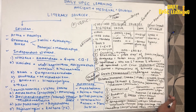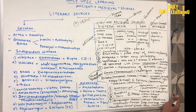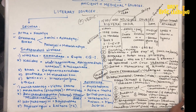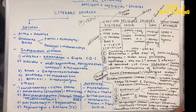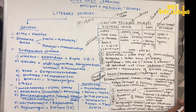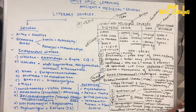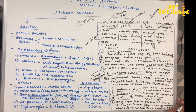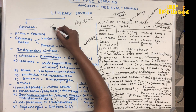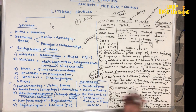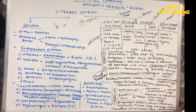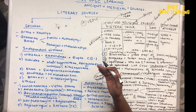Good morning guys, welcome to daily UPSC learning. Today we are going to read the most difficult topic according to everyone, that is ancient and medieval India. There are some difficult questions about sources, but if we study 8 to 10 questions we can get 5 to 6 questions correct. The rest of the questions will be either factual or very analytical.